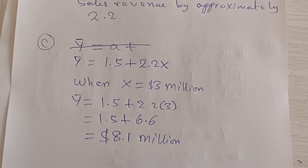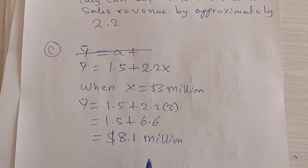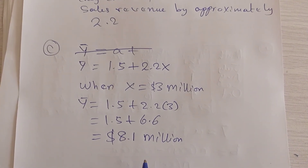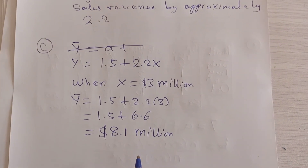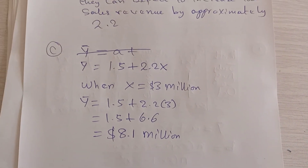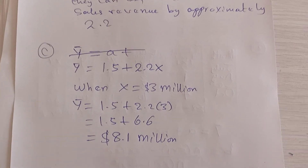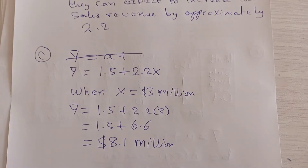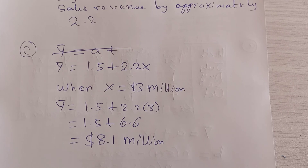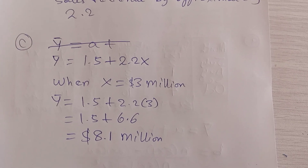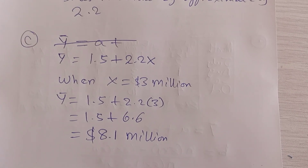Therefore, when 3 million dollars is spent on advertising, we can estimate a sales revenue of 8.1 million dollars. That's the end of this solution. Thank you.